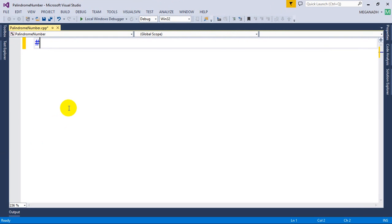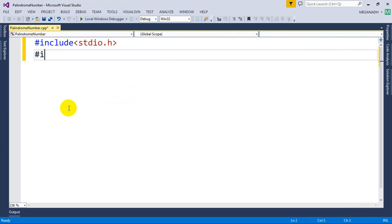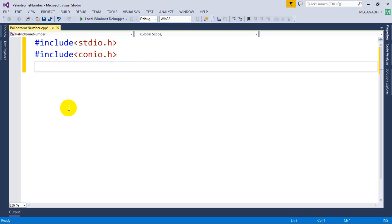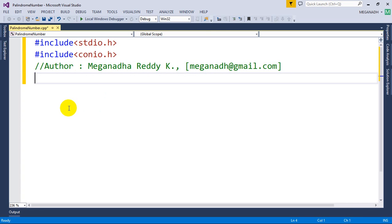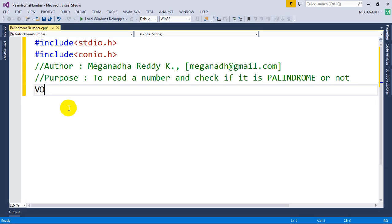The first step is include stdio.h and then include conio.h. And here I used to write author, that's my name Meghnaath, and then I'm going to put my email ID for your questions and feedback. And then purpose of this program is to read a number and check if it is palindrome or not. Now let's start with the program.